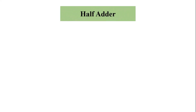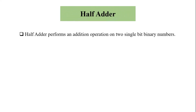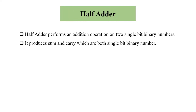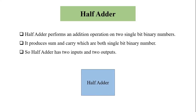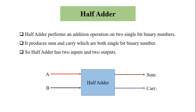First we will perform the half adder circuit. A half adder performs an addition operation on two single bit binary numbers. It produces a sum and carry, which are both single bit binary numbers. So a half adder has two inputs and two outputs. This is the block diagram of half adder where A and B are the inputs and sum and carry are the outputs.